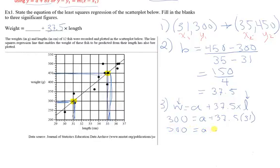So that gives me that 300 is a plus 1162.5 to figure out what a is, subtracting from both sides to get negative 862.5 is equal to a.